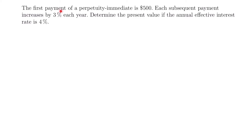For our next example, the first payment of a perpetuity immediate is $500. Each subsequent payment increases by 3% each year. Determine the present value if the annual effective interest rate is 4%. We have an increasing perpetuity — but is it arithmetic or geometric? Since each payment increases by 3%, that is a rate or percent, not a set amount. This is a perpetuity with a geometric progression.